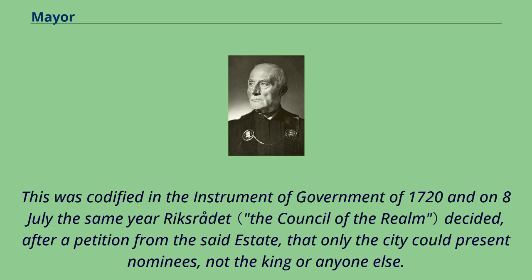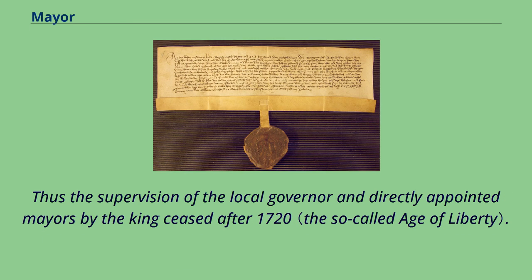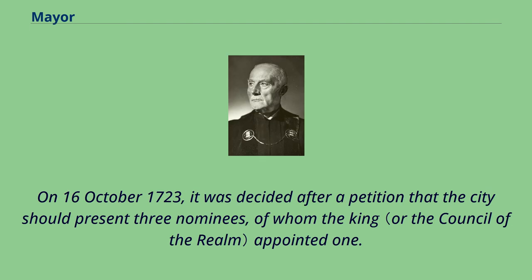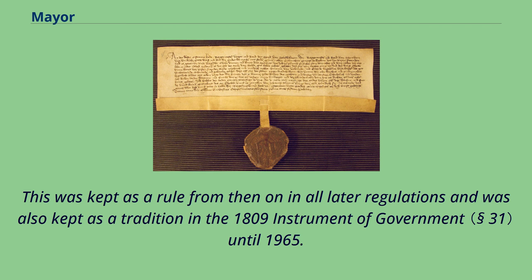This was codified in the Instrument of Government of 1720, and on 8th of July the same year it was decided, after a petition from the said estate, that only the city could present nominees, not the king or anyone else. Thus the supervision of the local governor and directly appointed mayors by the king ceased after 1720. On October 16, 1723, it was decided that the city should present three nominees, of whom the king appointed one. This rule was kept in all later regulations and as tradition in the 1809 Instrument of Government until 1965.